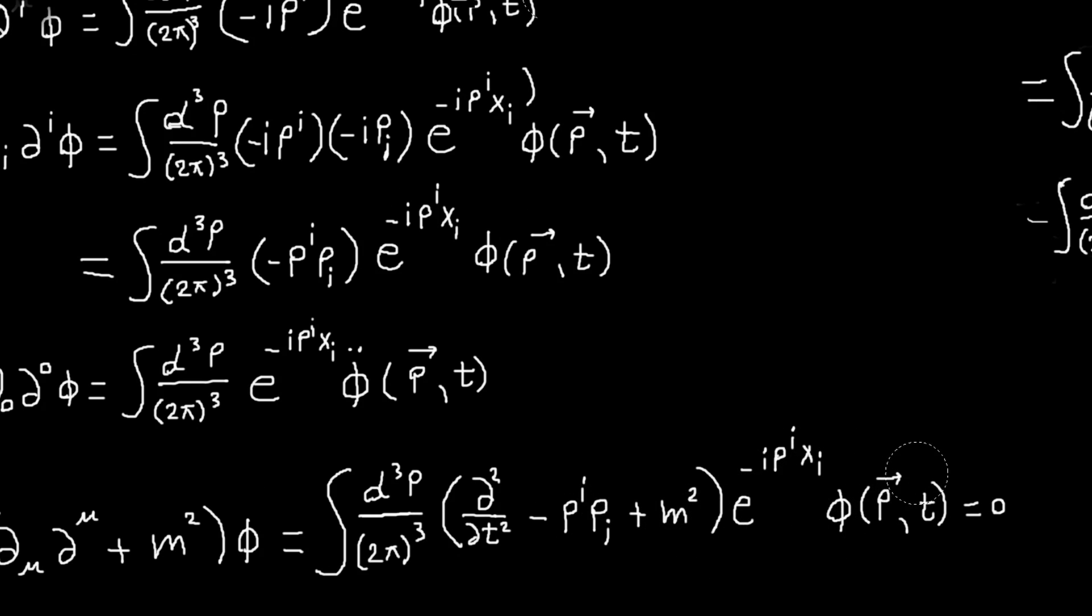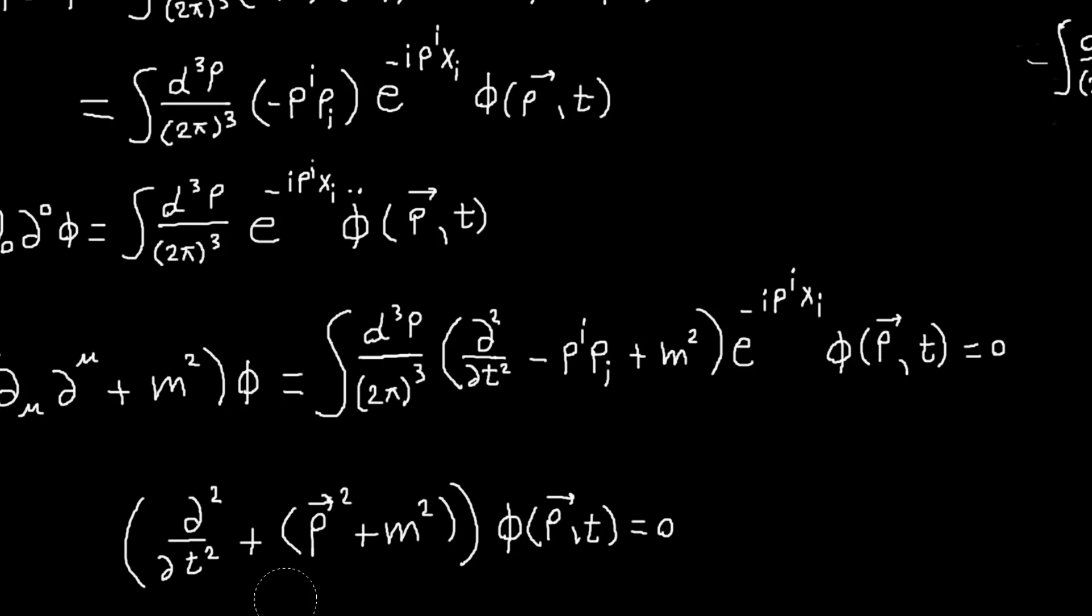A way to satisfy this equation is that for every value p, the integrand vanishes. This e to the minus i pi xi will never be zero, so we can disregard that. We're basically led to this condition equation where I've written pi pi. So pi with i lower is minus p, that cancels with this minus, we get a plus. We can write our equation like this.